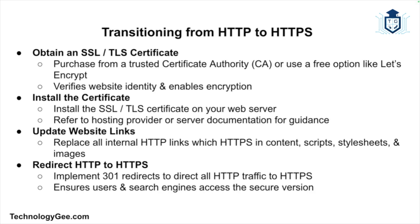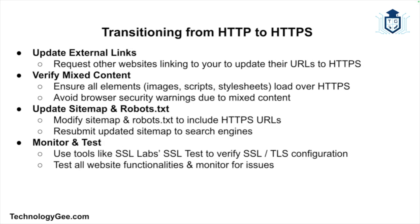Updating links includes updating URLs in your site's content, scripts, stylesheets, and images. Then you want to set up 301 redirects to automatically redirect HTTP requests to the HTTPS version of your site. This ensures that users and search engines are directed to the secure version of your website. You should also update external links — if other websites link to yours, request them to update their links to use HTTPS. While this step is not always feasible, it helps in maintaining a consistent, secure browsing experience.